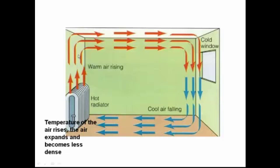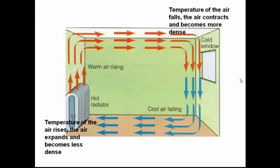When the air gets to the ceiling, it can't go any further up, so it goes across. As it goes across, it starts to cool, the temperature falls, the particles slow down, they get closer together, the air contracts and becomes more dense, and so it sinks downwards.